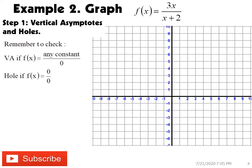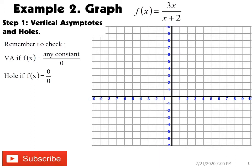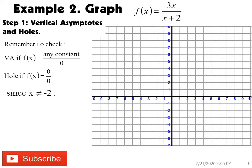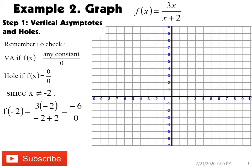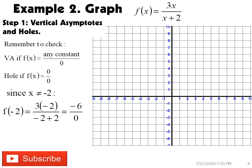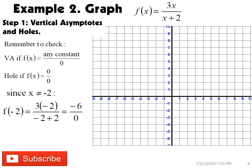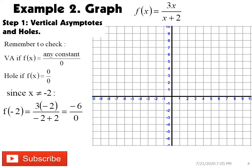Let's have another example. We have f of x is equal to 3x over the quantity x plus 2. Looking at the denominator, we have x plus 2. This means our value of x cannot be equal to negative 2. If we substitute negative 2 into our rational function, we will get negative 6 over 0. If you have any constant over 0, you have a vertical asymptote at that value of x. But if you have 0 over 0, you have a hole. So clearly, we have a vertical asymptote at x equals negative 2.